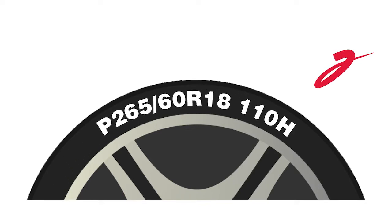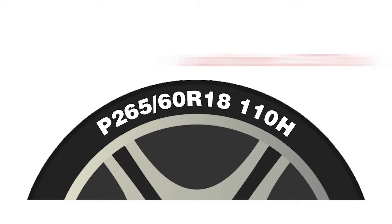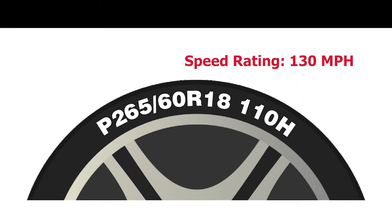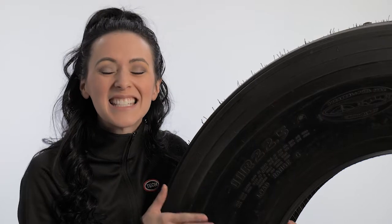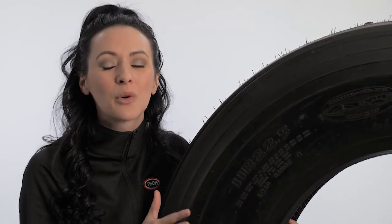On this tire, after the sizing, is 110H. The 110 is a code for the load index, or the maximum load it can carry, which is 2,337 pounds. The H is for the speed rating — this tire should not exceed 130 miles per hour. If the load or speed are higher, the tire can experience premature tire failure due to heat fatigue and/or flexing of the tire.